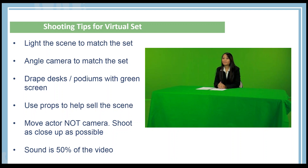Next, angle the camera to match the set. Our virtual sets come with multiple angles, so before you start shooting, think about what angles you might want to use. Some of our newsrooms have a 45-degree angle, so you can look straight on or use an angle that's more at 45 degrees. You'll need to adjust your actor to match that scene of the virtual set.